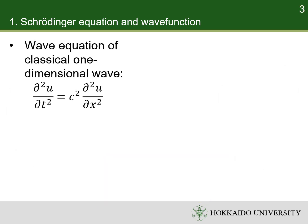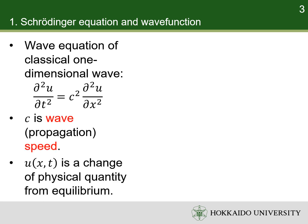A classical one-dimensional wave, including light wave, satisfies the wave equation, which is a differential equation of position and time as variables, with a parameter c, the propagation speed. The function is a physical quantity representing a change from equilibrium.